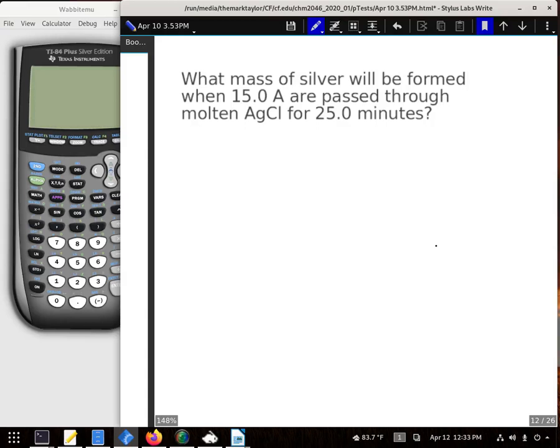What mass of silver will be formed when 15 amps are passed through molten silver chloride for 25 minutes? Alright, first thing I need to do is start with those 25 minutes and convert that into seconds.